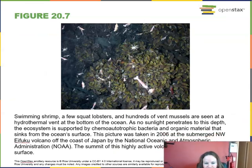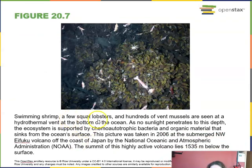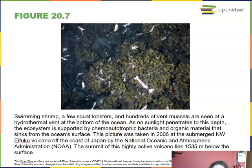Here's an example of swimming shrimp, lobsters, and hundreds of vent mussels seen at a hydrothermal vent at the bottom of the ocean where no sunlight penetrates — thanks to the chemoautotrophic bacteria that live there. This was taken in 2006.